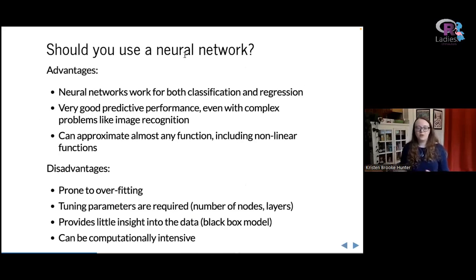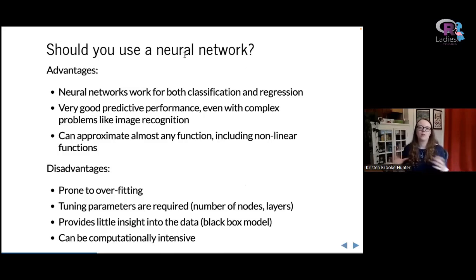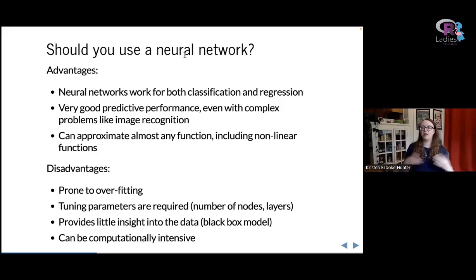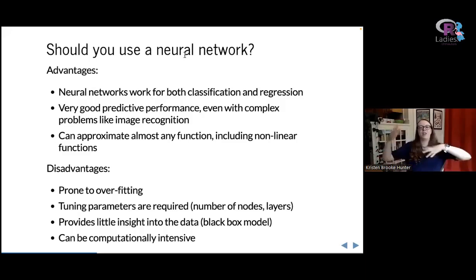When should you use a neural network? The advantages are that they work for both classification and regression, they tend to have very good predictive performance, and they work really well even on complicated problems like image recognition — figuring out what's a dog versus a cat is notoriously hard for computers, but neural networks drive a lot of those algorithms. The reason they work so well is that they can approximate almost any function, including really complex non-linear functions — unlike linear regression, which assumes a very simple linear relationship.